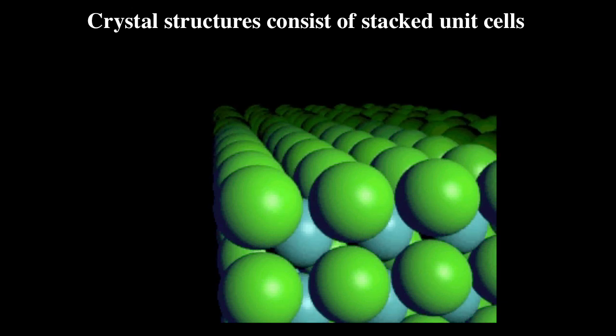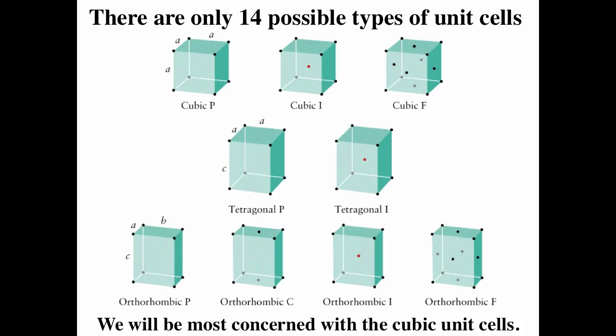A crystal is going to contain a really huge number of unit cells. A single crystal of table salt is going to contain something like 10 to the 19th unit cells — a really large number. Unit cells are very, very small; atoms and molecules are obviously really, really small.